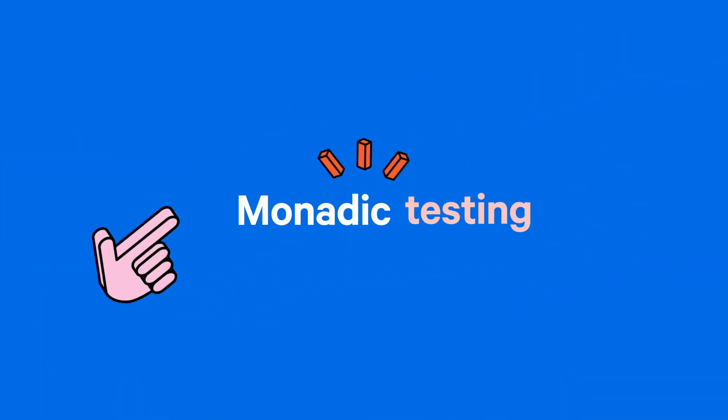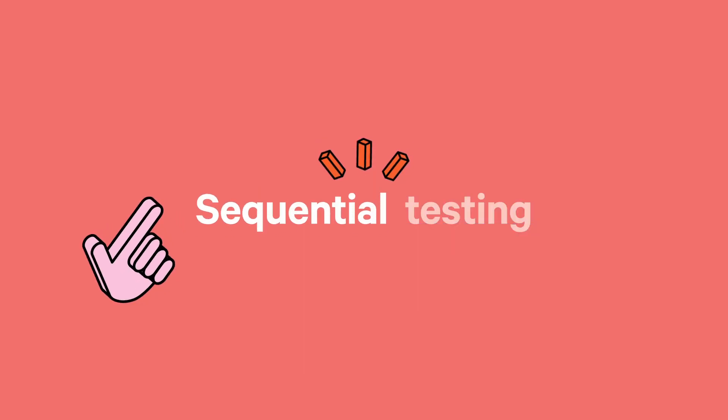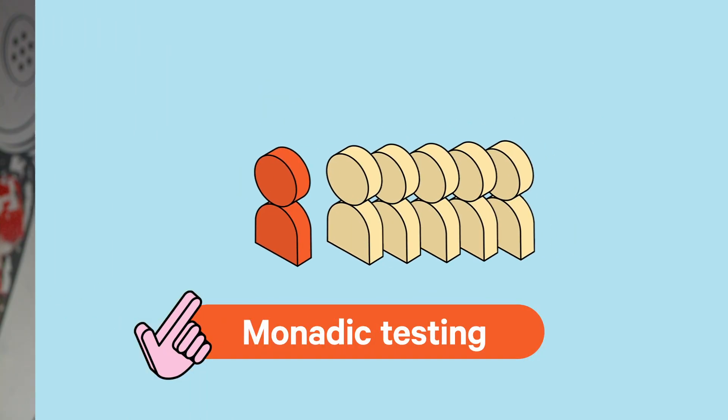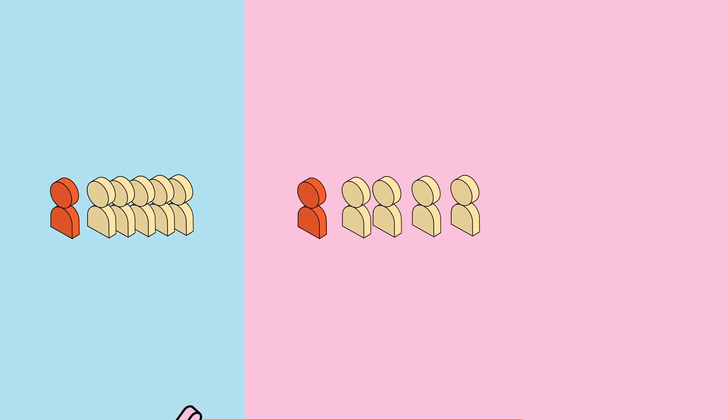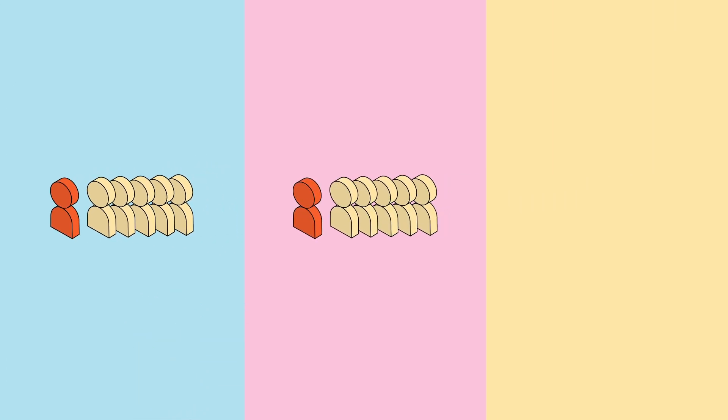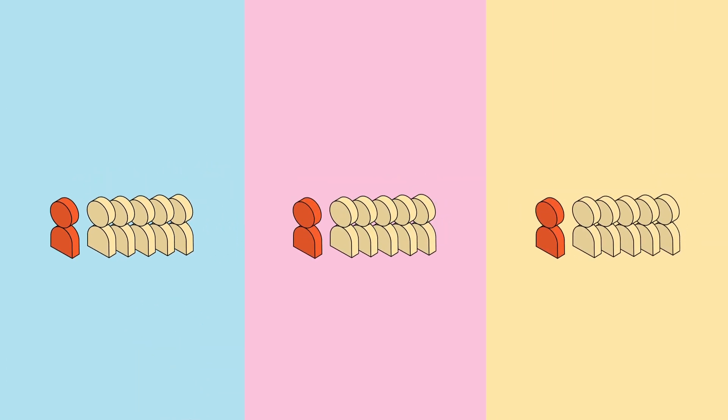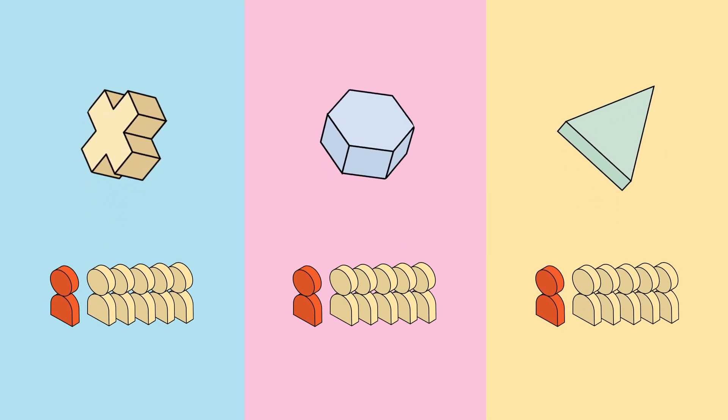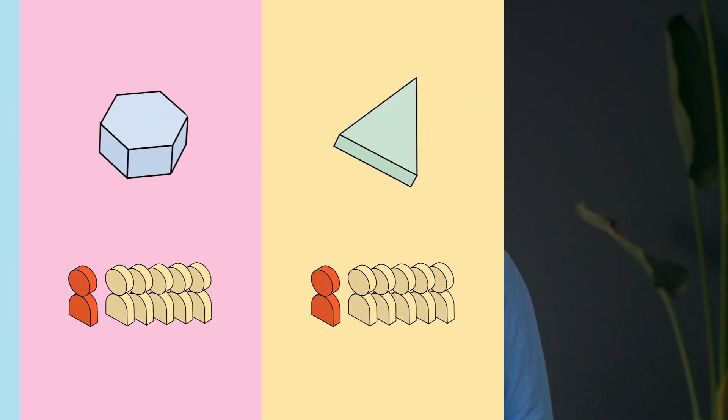What types of creative testing are there? If you want to test multiple creative assets, there are two main types: monadic and sequential. Don't worry, they sound far more complex than they actually are. For monadic testing, your audience is split into as many groups as the number of assets you're testing. So if you have three logos to test, you'll have three different groups of people, each analyzing a different design. This is for when you want more detailed analysis and in-depth responses from your audience.